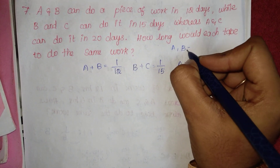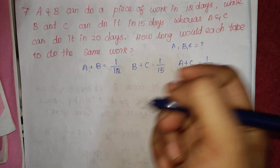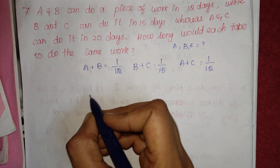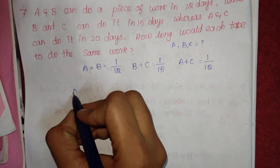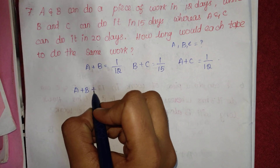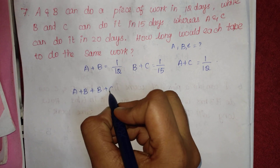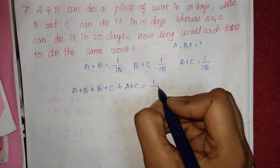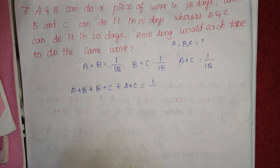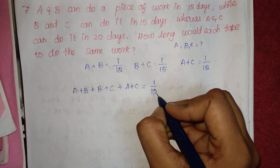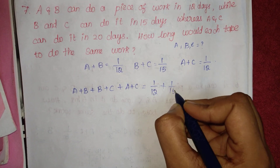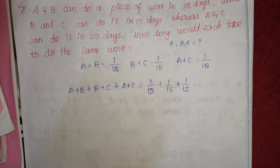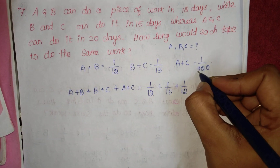So we have A, B, and C. We can add the three pairs: A plus B, B plus C, and A plus C. When we add them we get 2(A+B+C). So: 1 by 12 plus 1 by 15 plus 1 by 20.